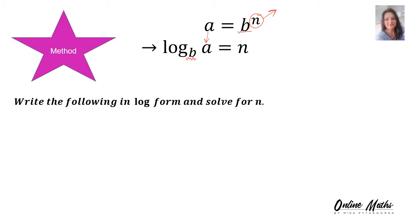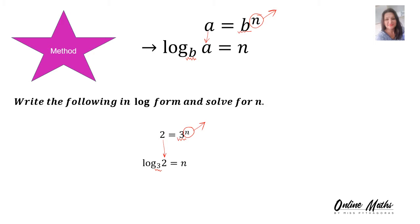Let's do a couple of examples. Write the following in log form and solve n. Given the exponential equation: 2 is equal to 3 to the n. You write log, the base of the exponent stays the base of the logarithm, this number on its own goes with the log, and then the exponent stands on its own on the other side of the equation.